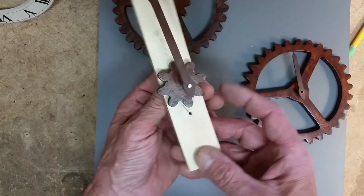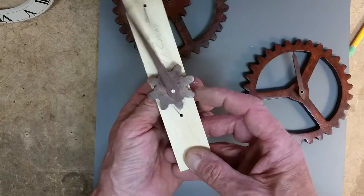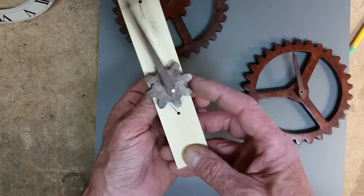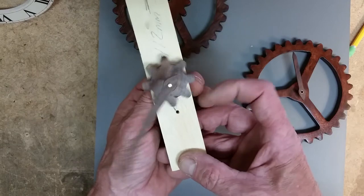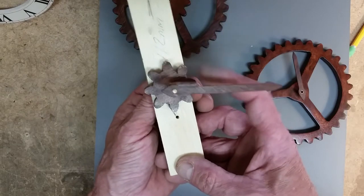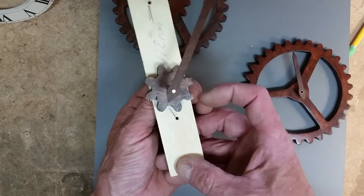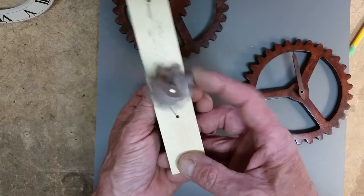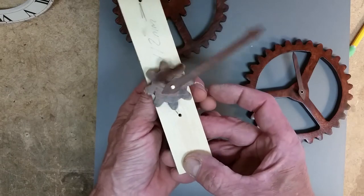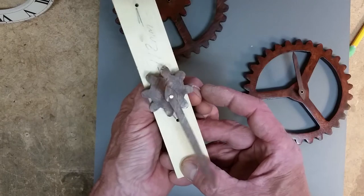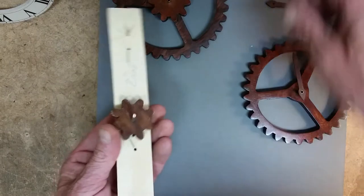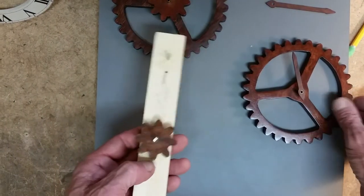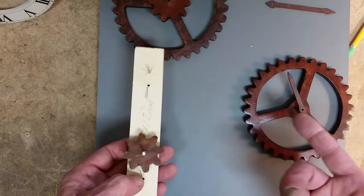It's also important to note that the drive train is turning this gear one time per hour, and you can see that's very convenient because the minute hand is attached to that shaft and that's what you want to do—you want it to go around once per hour. Now the rest of it is all designed to turn the hour hand at a certain rate.